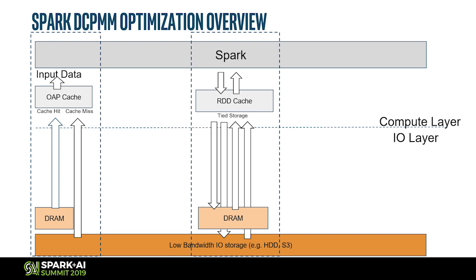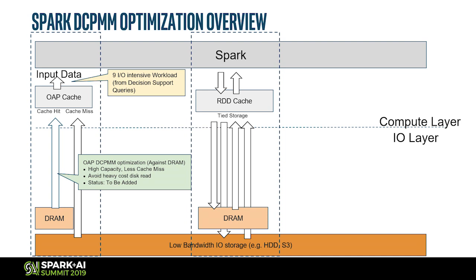We have a few optimizations ready for customers to use. The first is to take advantage of the input side with a project called OAP — Optimized Analytic Package. By leveraging the OAP IOCache, for on-premises customers still using hard disk for data storage, the IO will be a bottleneck. For cloud users putting data into remote storage like Azure, AWS, or S3, the network will be a bottleneck. OAP IOCache is trying to address this problem, and by leveraging Optane DC Persistent Memory, we can have even higher capacity than the previous DRAM-based implementation with much less cache miss.